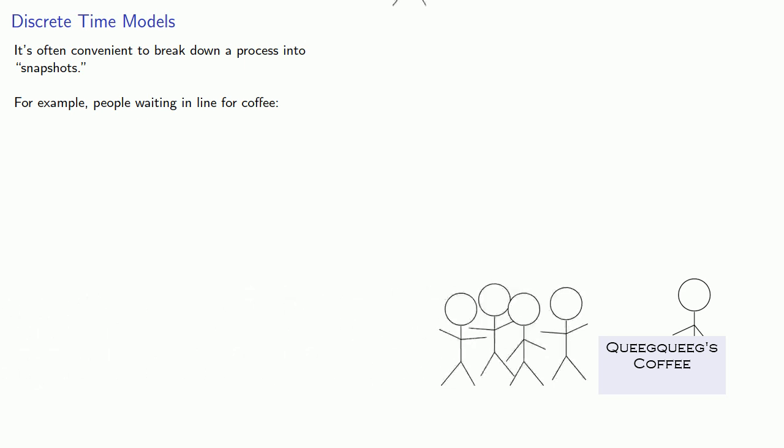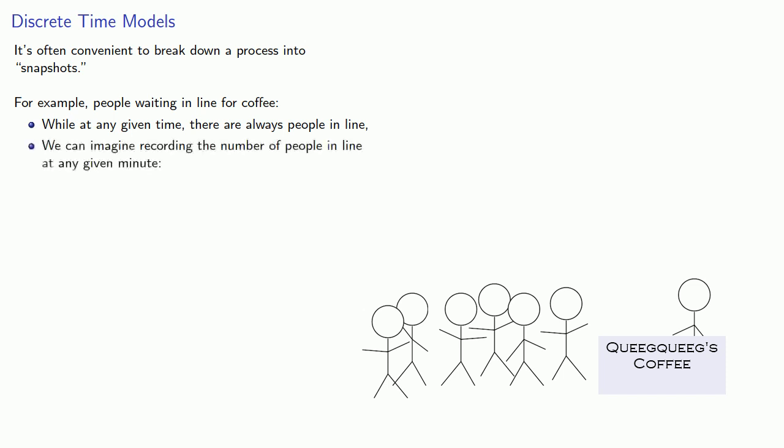It's often convenient to break down a process into snapshots. For example, people waiting in line for coffee. While at any given time there are always people in line, we can imagine recording the number of people in line at any given minute.